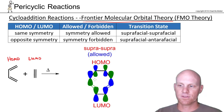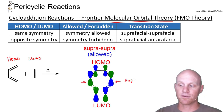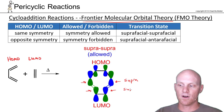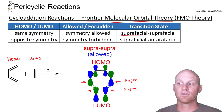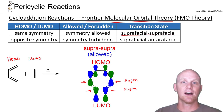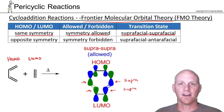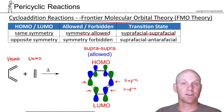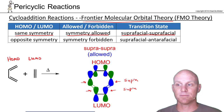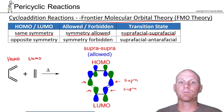For the diene it was interacting with the bottom lobe on both sides, so we called that suprafacial. For the dienophile it was interacting with the top lobes on both sides - the same face - so that's also suprafacial. The key point is that with matching symmetries, you get a suprafacial-suprafacial transition state. That occurs when you have a symmetry-allowed reaction, meaning the HOMO and LUMO of the diene and dienophile respectively have the same symmetry - either both antisymmetric or both symmetric.